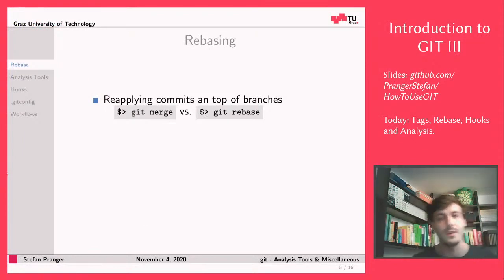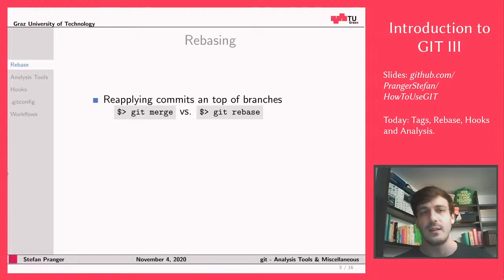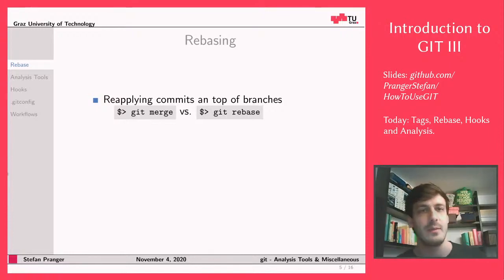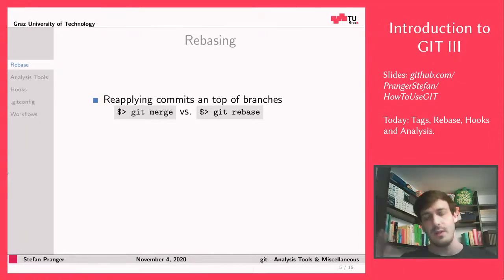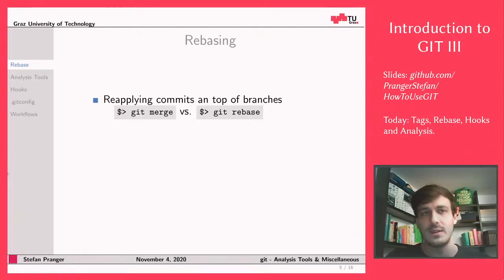Now let's look at rebasing. Rebasing means reapplying commits on top of another branch. There are two versions: the first lets you take commits and place them on top of another branch, and the interactive version lets you interactively rearrange, edit, drop commits, edit commit messages, and so on.